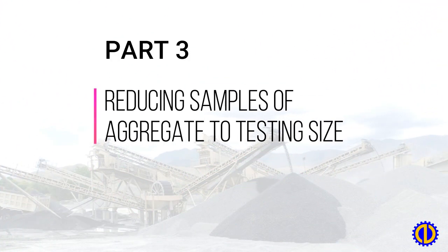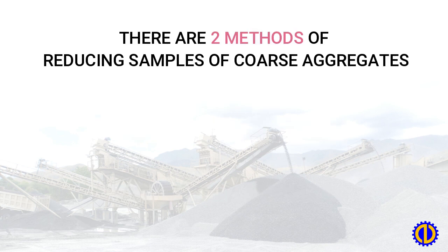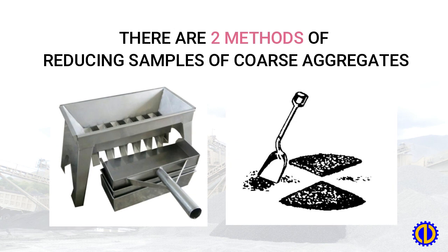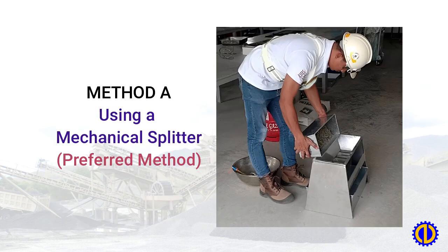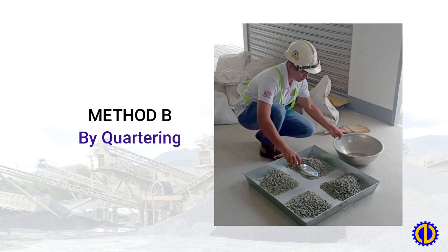Part 3: Reducing Samples of Aggregate to Testing Size, AASHTO T248 and ASTM C702. There are two methods of reducing samples of coarse aggregates: Method A, using a mechanical splitter, which is the preferred method, or Method B, by quartering.